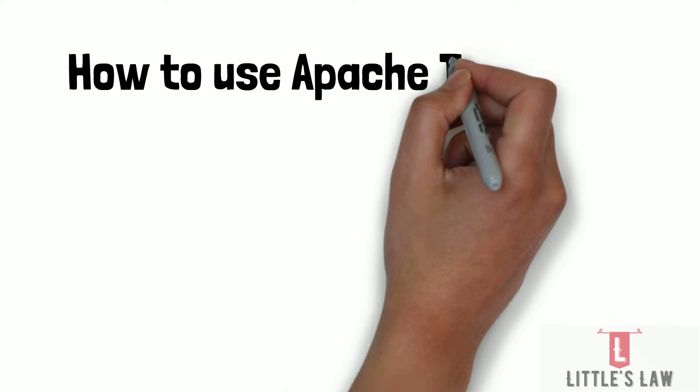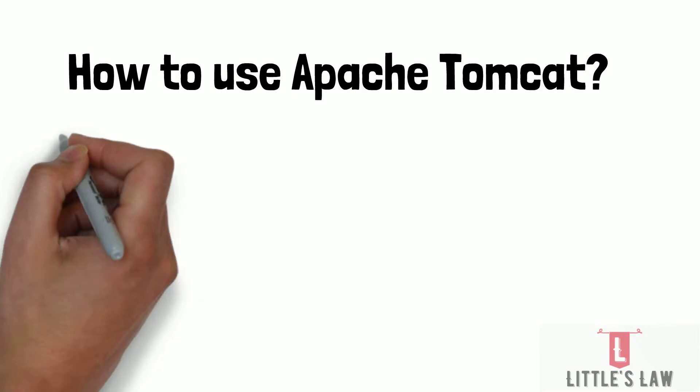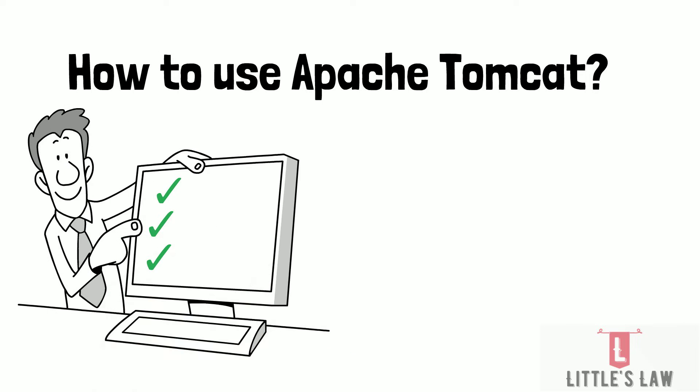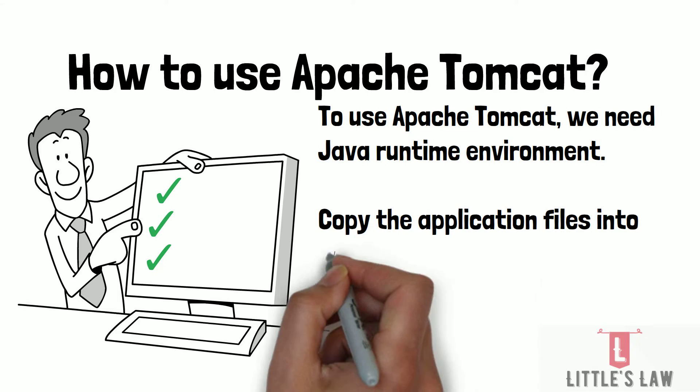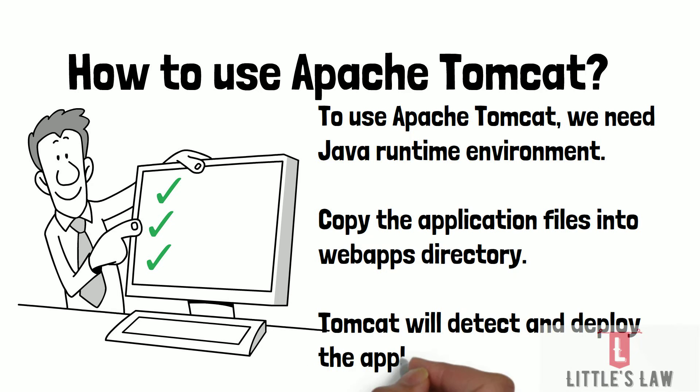To use Apache Tomcat, we need a Java Runtime Environment (JRE) installed on our machine, which comes when we install Java. We can then download the Apache Tomcat distribution file from the official website and follow the instructions for installation and configuration. Once Apache Tomcat is installed and running, we can deploy our Java-based web applications by copying the application files to the webapps directory in the Tomcat installation, and Tomcat will automatically detect and deploy the application.